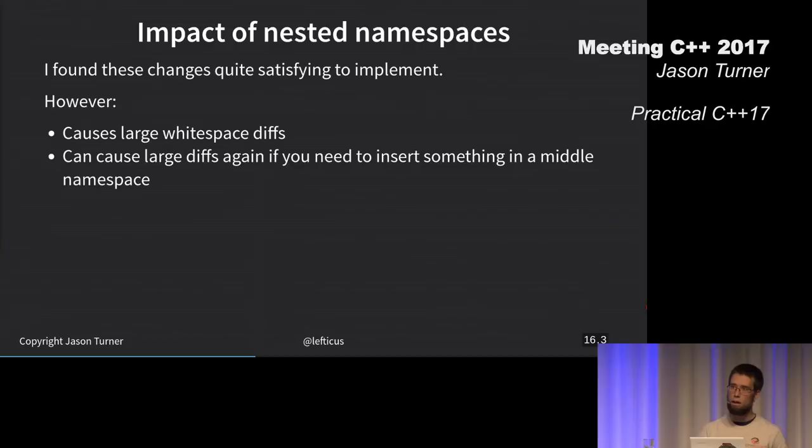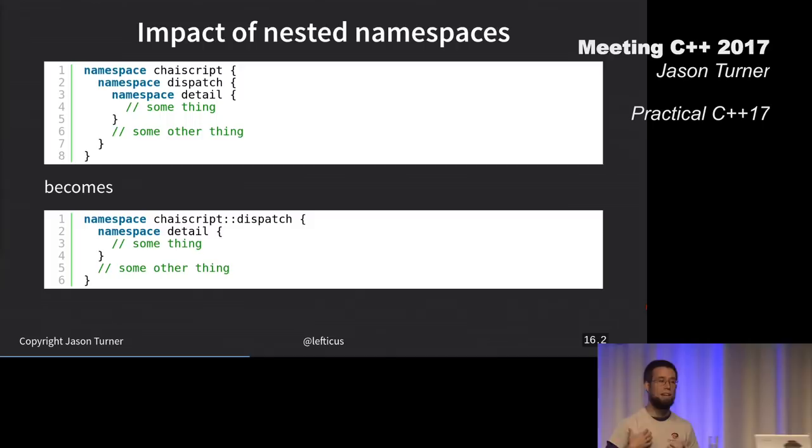If you're like me, and you have it indented like this, a question that you have is what happens if I want to add something to the ChaiScript namespace right here, after I've gone and reformatted it to this? Do I split it back up again? Do I just add a new namespace ChaiScript above this? There's going to be questions.